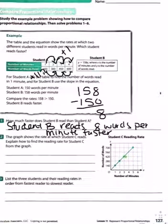Number two, the graph shows the rate at which student C reads. Explain how to find the reading rate for student C from the graph. You need to write down the points that you can read clearly: 1 and 140, 2 and 280, 3 and 420.